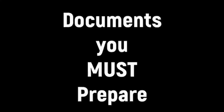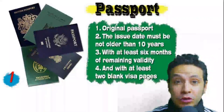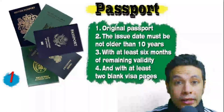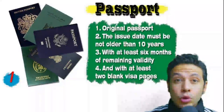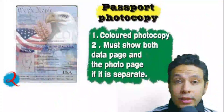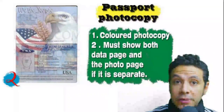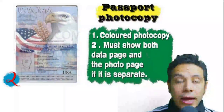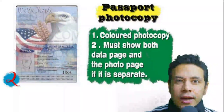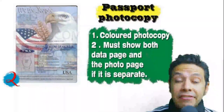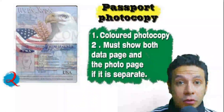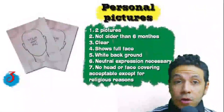Regarding the travel documents you need to prepare: your passport must be original, not older than 10 years, with at least six months of remaining validity and at least two blank visa pages for stamps. In many cases you will also need a passport photocopy — one or more copies, preferably colored — with both the data page and photo page showing.